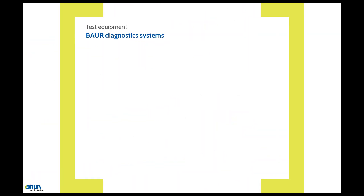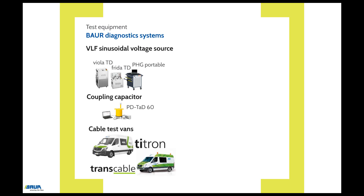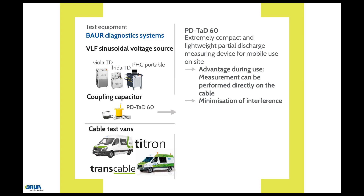To perform measurements like the one described in the example, a VLF sinusoidal voltage source is required, such as FridaTD, ViolaTD, or PHG from Baur. With the PDTAT60 partial discharge diagnostic system and a PC to control it, the measurement of the dissipation factor and partial discharges can be performed in parallel. The PDTAT60 represents the most compact and lightweight partial discharge measuring device for mobile use on site. This portability makes it possible to perform the measurement directly on the cable, which minimizes interference and thus represents an important precondition for precise and meaningful measurement results.